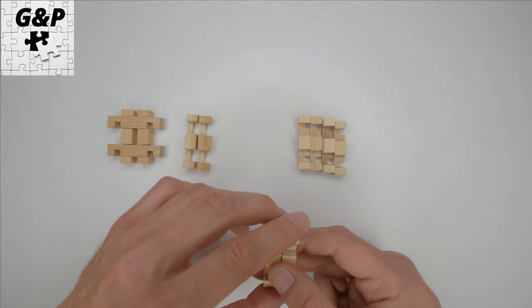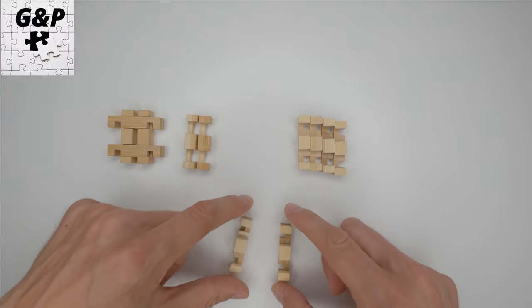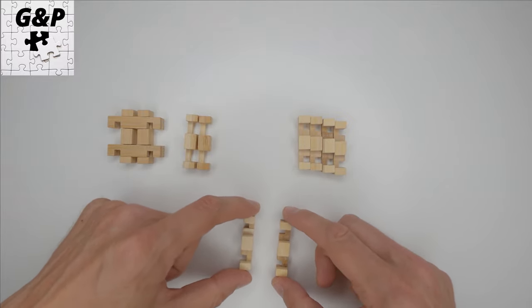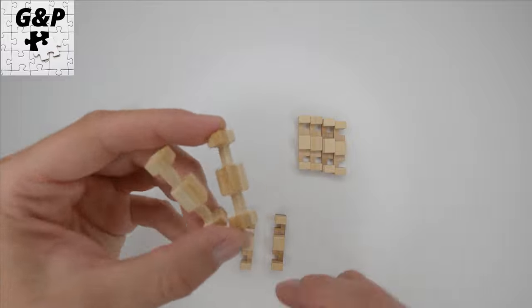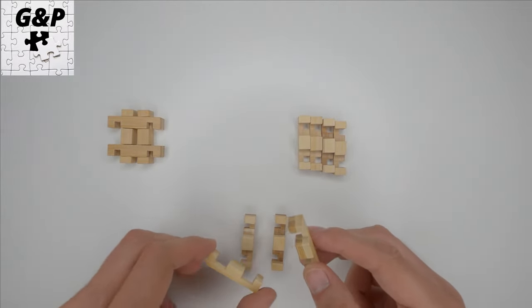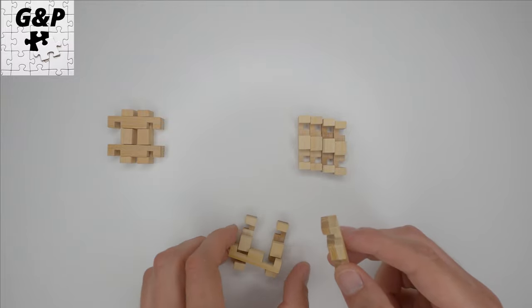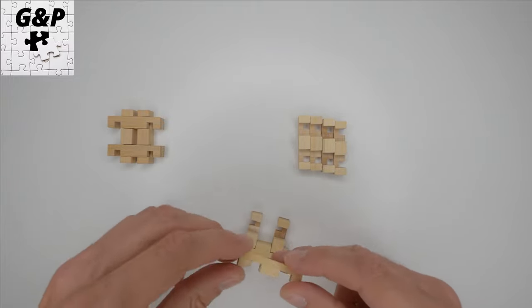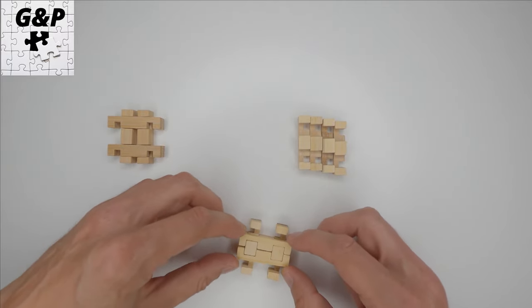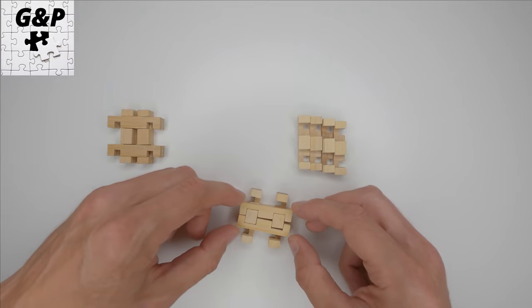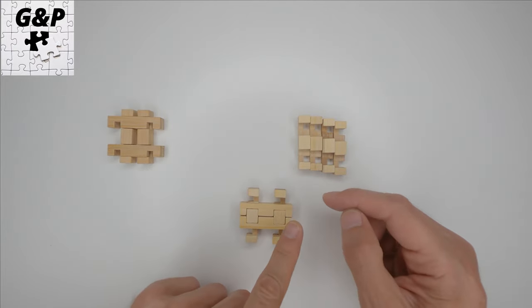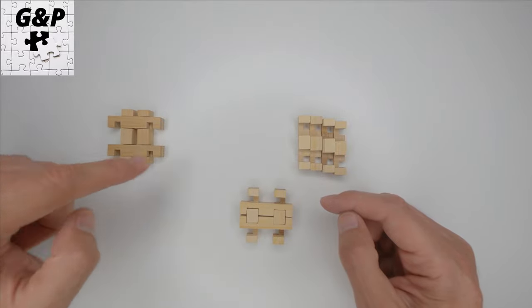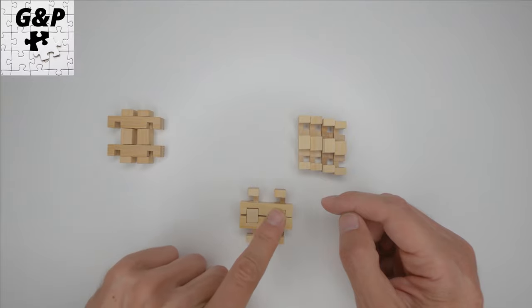Then we take the other two parts and we take these two. We put them into the position like so. Make sure that the surface when you put the first part, well the first set of parts and the second set of parts, so that the surface would be flat.